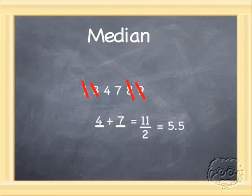Does that make sense? Well, yes, because 5.5 is the number that is between four and seven. So that's our median.